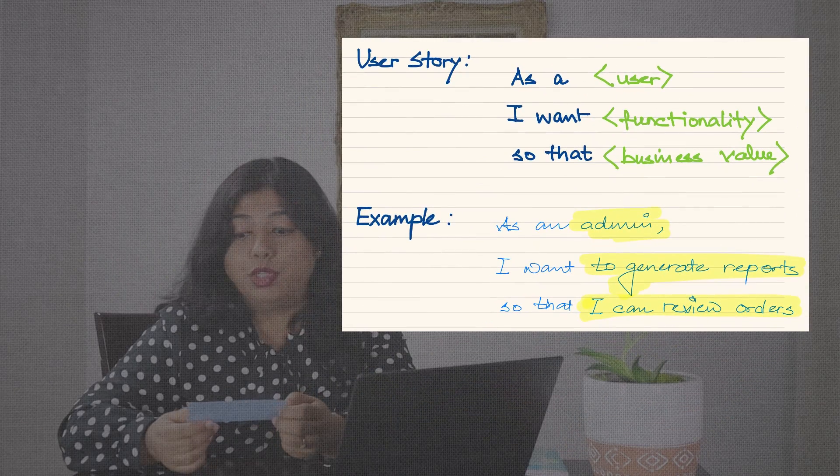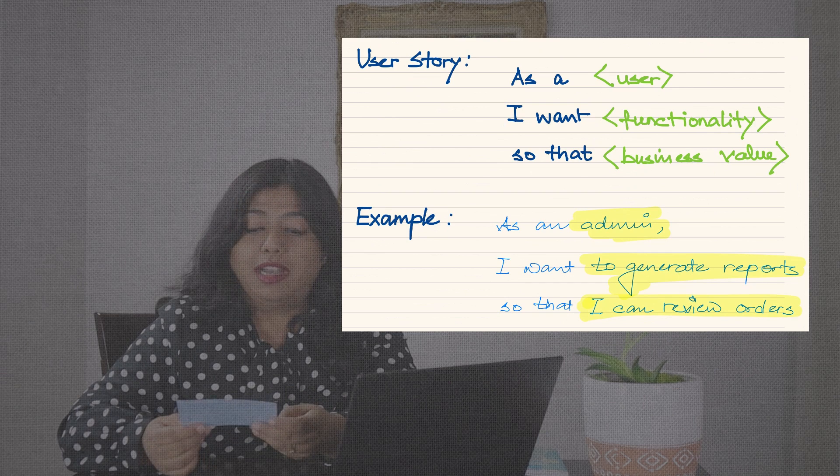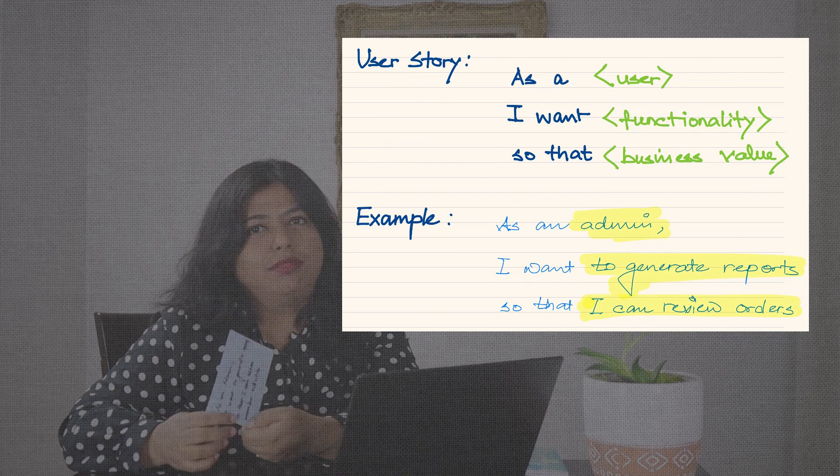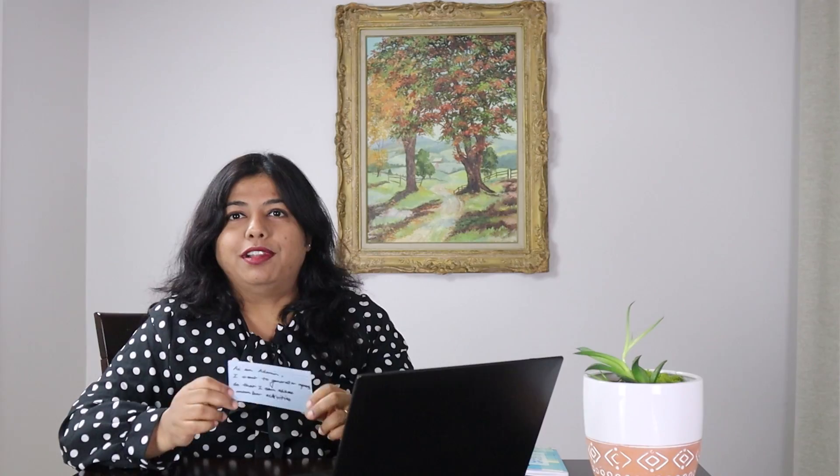On this card I did write: 'As an admin, I want to generate reports so that I can assess member activities.' Not a great example but I came up with it on the fly, just showing you the age-old index card to bring some perspective to it. The back of the card could be used to add finer details, which is like the acceptance criteria.